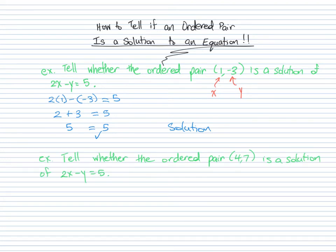Let's try one more. Okay, so here we go again. We have an ordered pair 4 comma 7, and we want to see if it's a solution to this equation.